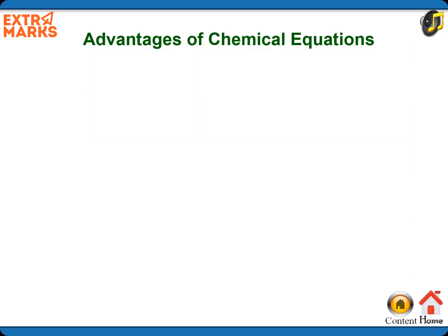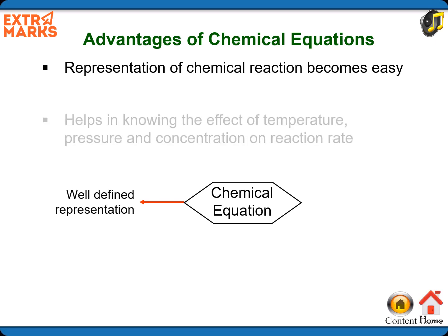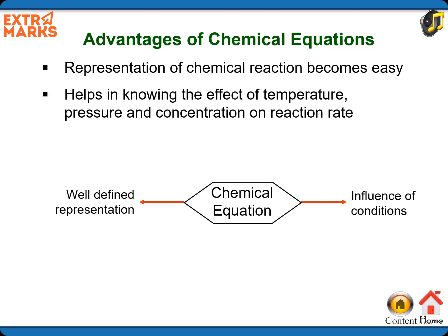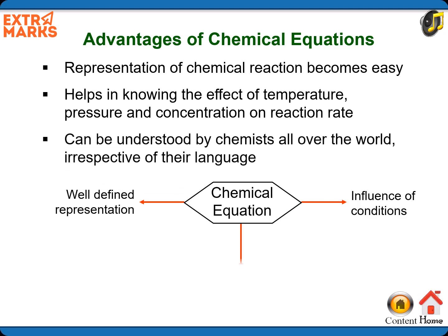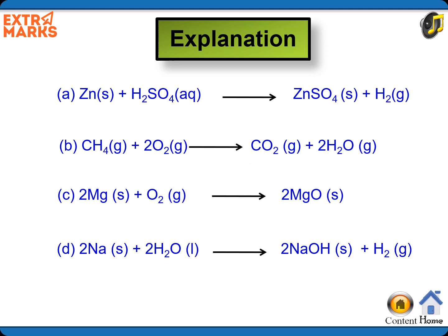Now we will study about some advantages of chemical equations. Representation of chemical reaction becomes easy. It helps in knowing the effect of temperature, pressure, and concentration on reaction rate, and can be understood by chemists all over the world irrespective of their language. Let us see how we can balance a chemical equation. Examples to balance: zinc plus sulfuric acid forms zinc sulfate plus hydrogen; methane plus oxygen forms carbon dioxide plus water; magnesium plus oxygen forms magnesium oxide; sodium plus water forms sodium hydroxide plus hydrogen.